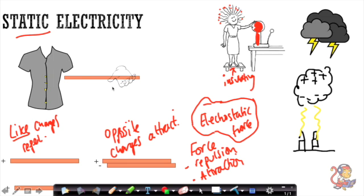The main thing they'll ask you about in the exam is how static electricity is generated - that's by rubbing two insulating materials together and electrons being transferred onto one of those materials. They won't ask in detail about how Van de Graaff generators or lightning works - those are just examples they might include in questions. The main focus is your understanding of how static electricity is generated, and applying the idea that like charges repel and opposite charges attract. Thanks for watching - if you found this useful, please press the like button and feel free to subscribe.